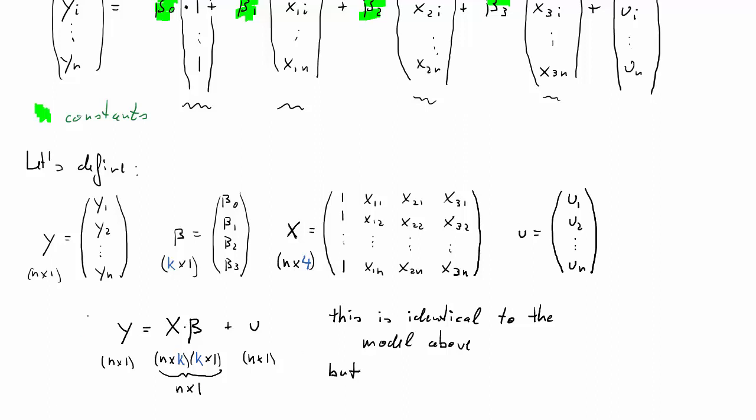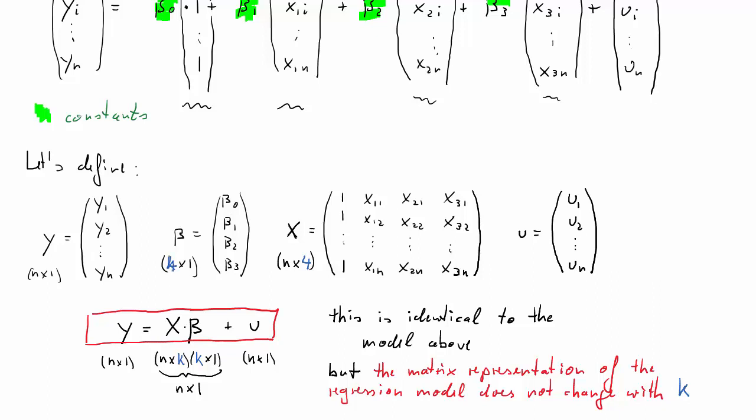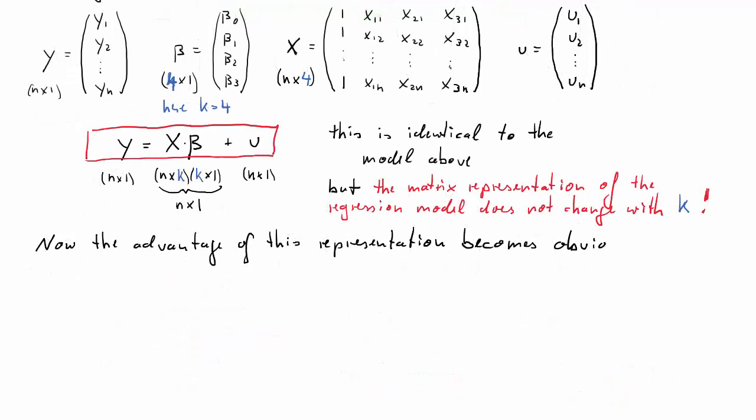So this representation is identical to the multiple regression model which we had before. So you'd say, so what's the fuss about? Well, the reason why this is so convenient is the following. This red representation of the regression model, we shall call it the matrix representation of the regression model. This is so convenient because really it will always look the same regardless of how many explanatory variables you have. So it doesn't change with that blue dimension k. It doesn't change with the number of explanatory variables we have.